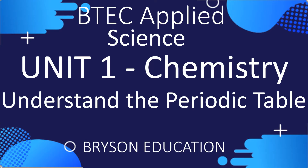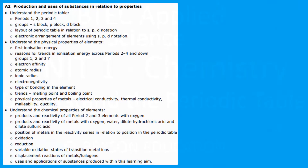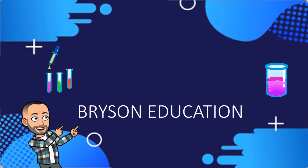Hello, welcome to my channel on chemistry lessons. This is BTEC applied science, unit 1 chemistry, and we're going to look at understanding the periodic table. This falls under learning aim A2. If you haven't seen all the previous videos that cover the entire learning aim A1, I suggest you go and watch those first. The periodic table is what we'll cover at the beginning here — we're going to cover the first four points in this video.